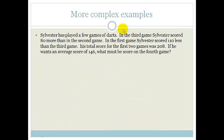Sylvester has played a few games of darts. In the third game, he scored 80 more than in the second game. In the first game, he scored 110 less than the third game. His total score for the first two games was 208. If he wants an average score of 146, what must be his score in the fourth game?